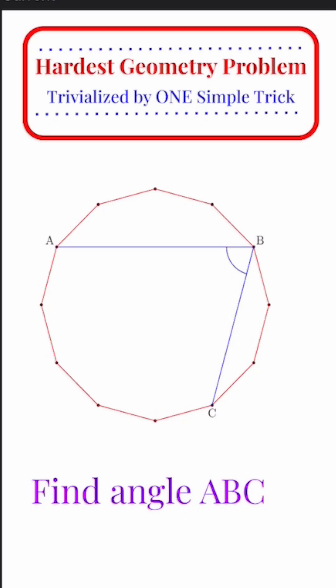This insanely hard geometry problem is trivialized by one simple trick. In a 12-sided polygon, a dodecagon, find the measure of angle ABC. So what we're going to do is draw a circle outside this polygon. Why?